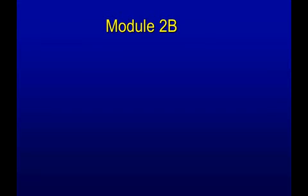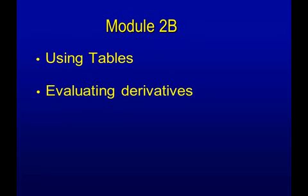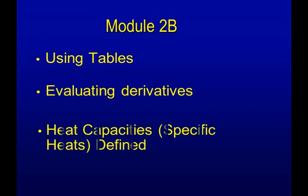Here we're going to talk more about properties, using tables, and finding things in tables. This is module 2B: using tables, evaluating derivatives, finding heat capacities, and defining heat capacities, which is just a derivative or a slope of some of the values in your tables.